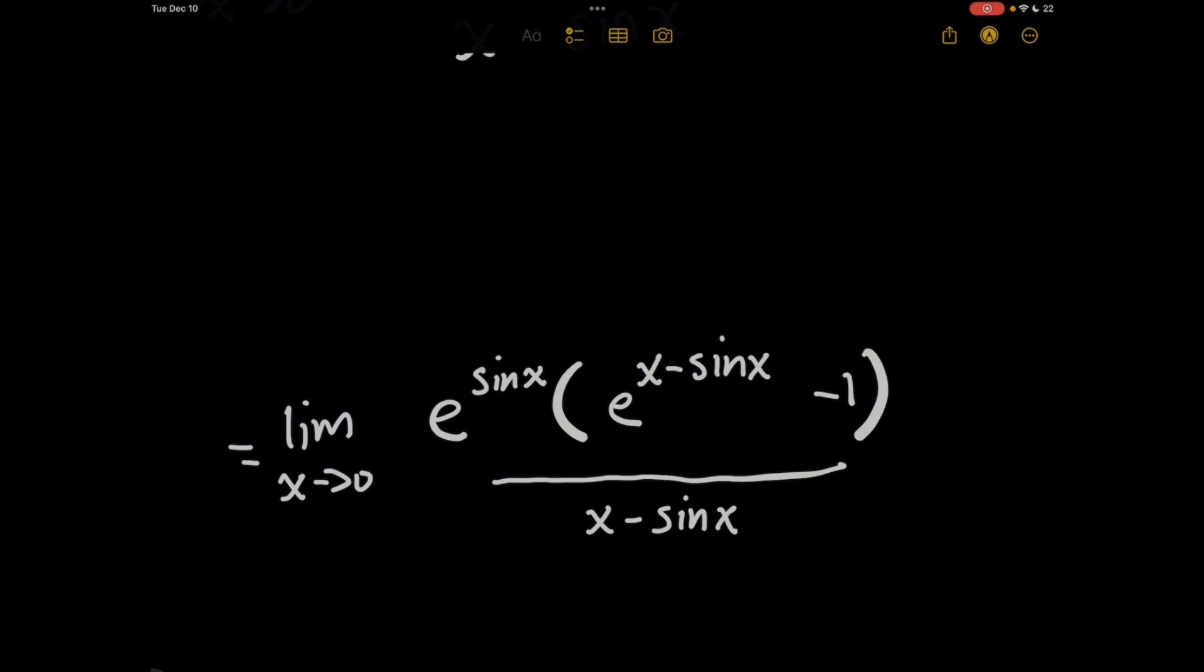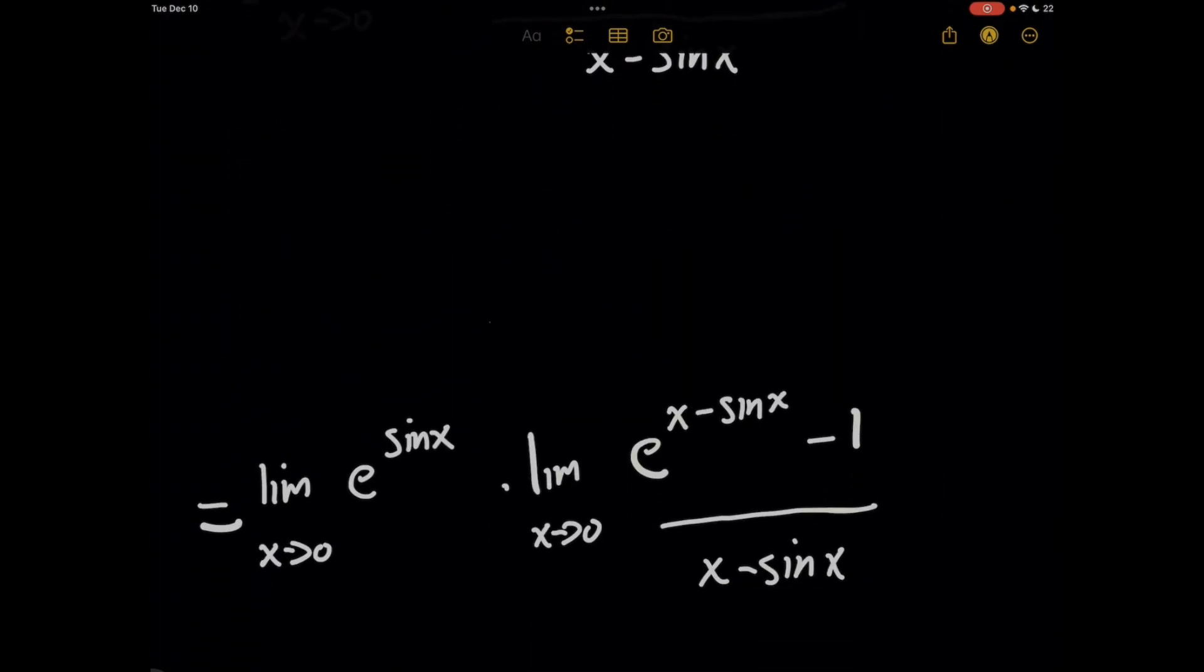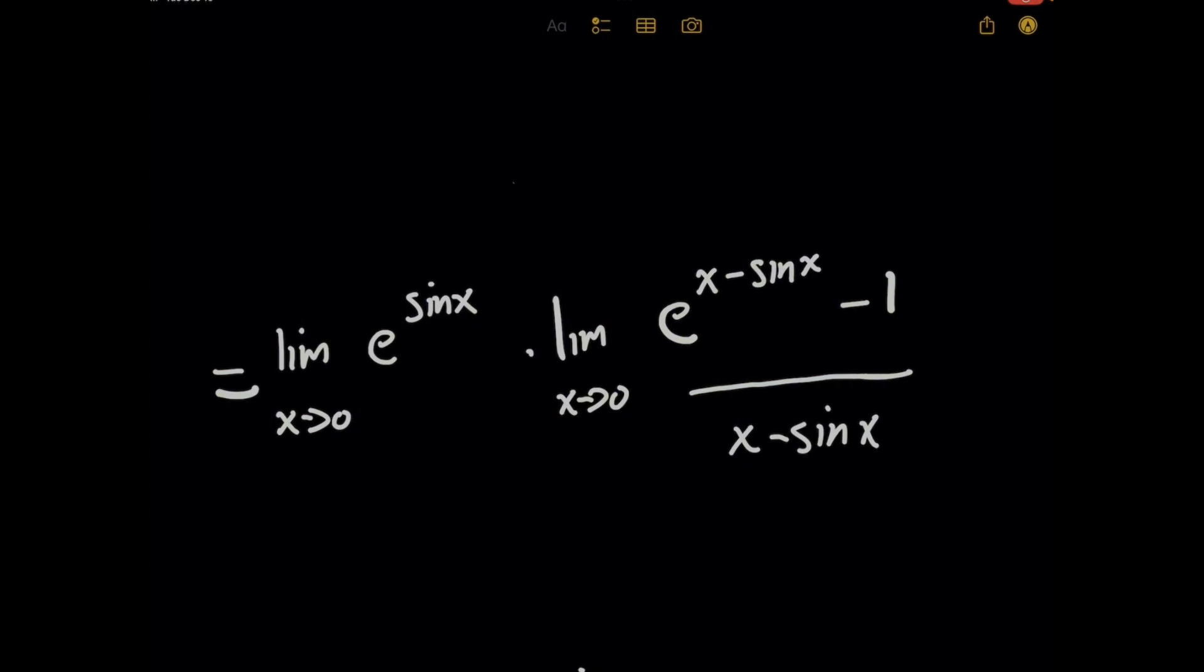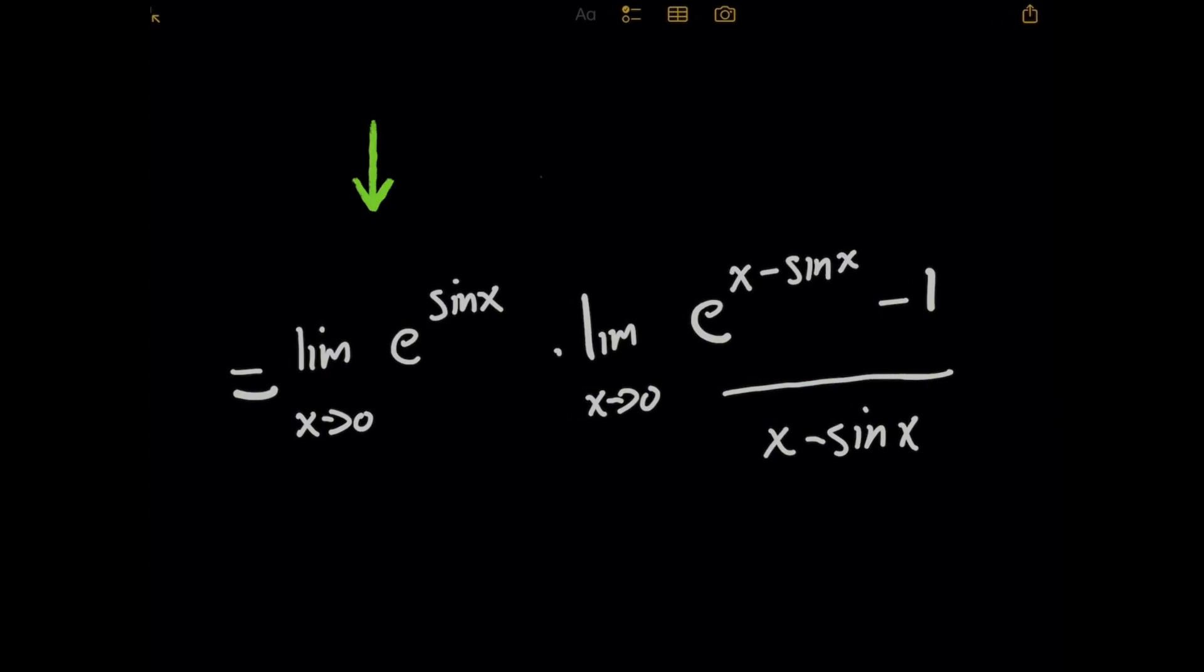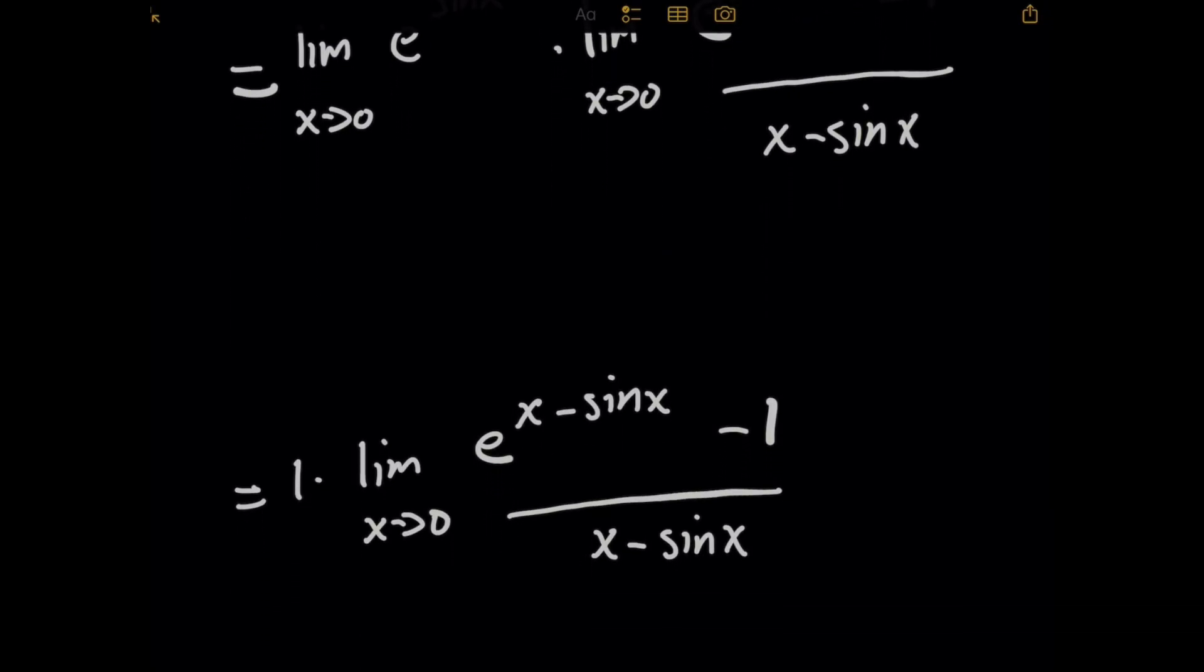Now what's nice about this is now we can use a special rule for limits called the product rule of limits. Because now we have this term e to the sine of x on the numerator, I can break this limit up into a product of two separate limit problems that are a lot easier to deal with. Because check it out, on the left-hand side I don't have a denominator, I can just plug in zero from the get-go for x, and that's just going to become one.